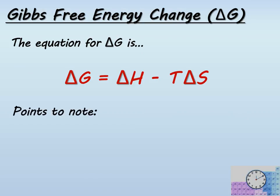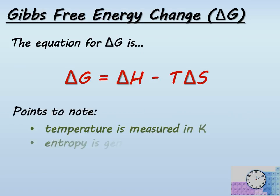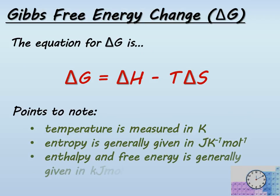There are some important features to note in this equation. Temperature is always measured in Kelvin; however, sometimes in an exam question they may give temperature in degrees centigrade, in which case you would be expected to convert centigrade into Kelvin. Entropy is generally given in joules per Kelvin per mole, but enthalpy and free energy are generally in kilojoules per mole. So it is important that you convert your entropy units into kilojoules per Kelvin per mole.